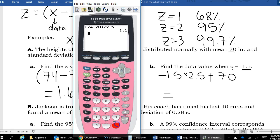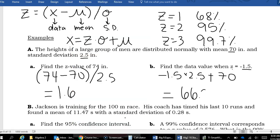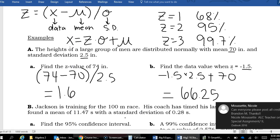So I'm going to go negative one and a half standard deviations times the standard deviation, and add the mean onto that. And my data value is 66.25. So 66.25 is exactly one and a half standard deviations below the mean.